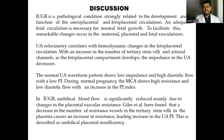IUGR is a pathological condition strongly related to the development and function of the uteroplacental circulation, and adequate fetal circulation is necessary for normal fetal growth. The normal umbilical artery waveform shows low impedance and high diastolic flow with low PI, while MCA shows high resistance and low diastolic flow with high PI. In IUGR, umbilical flow is significantly reduced mainly due to changes in placental vascular resistance, describing umbilical placental insufficiency.